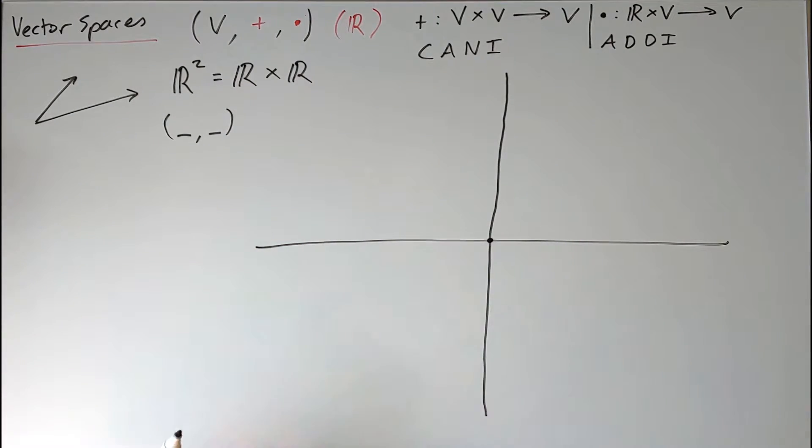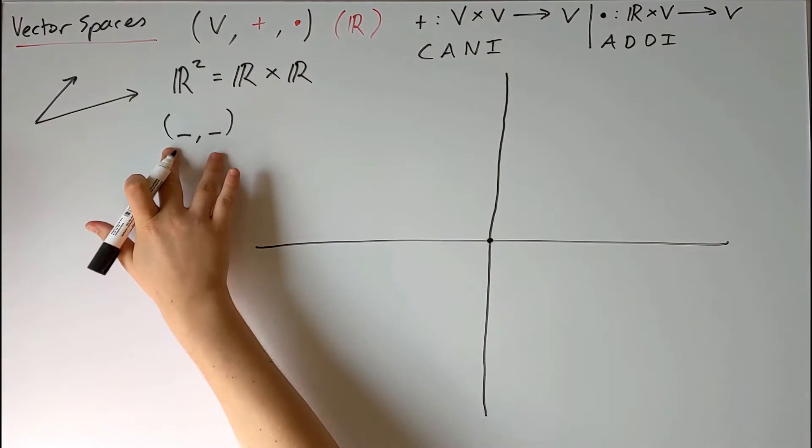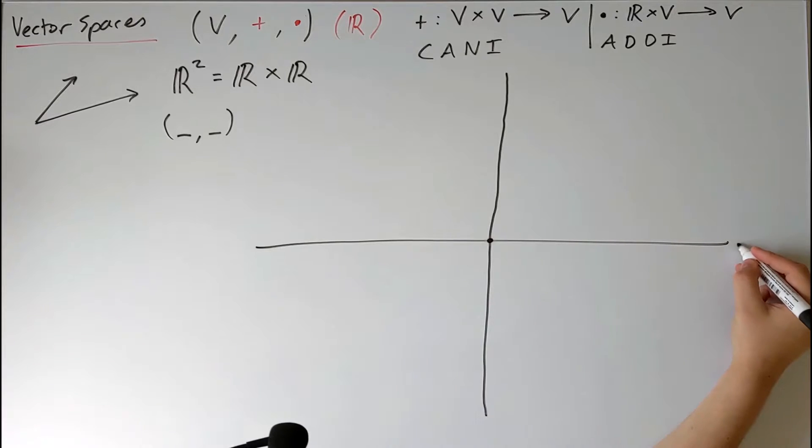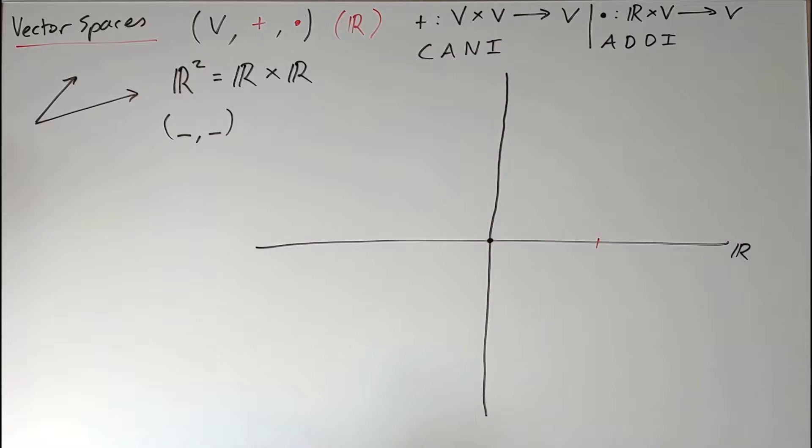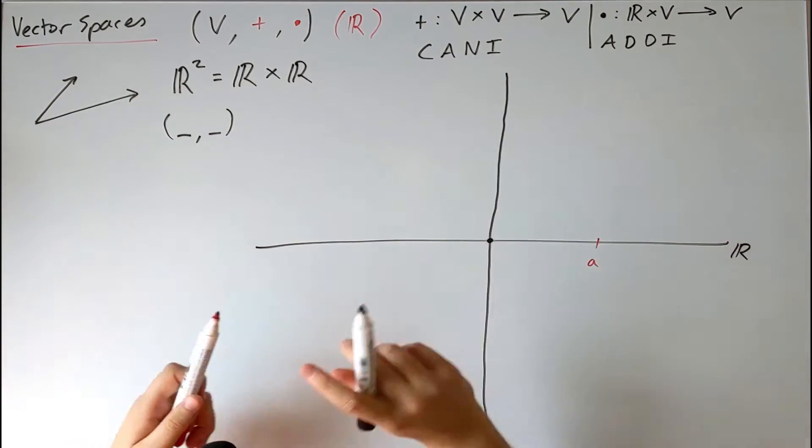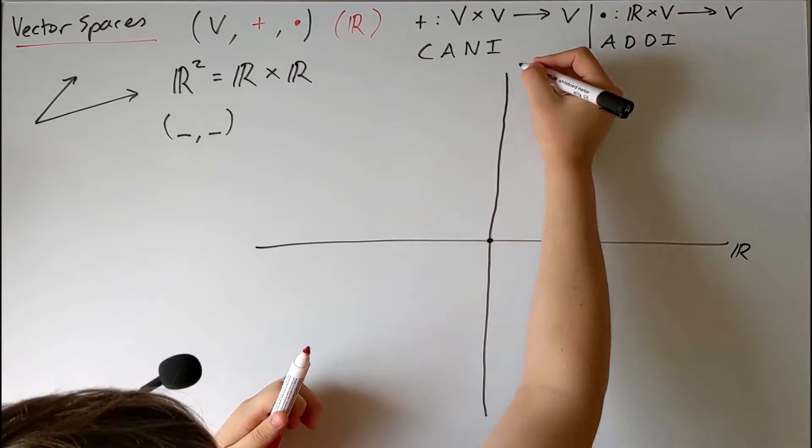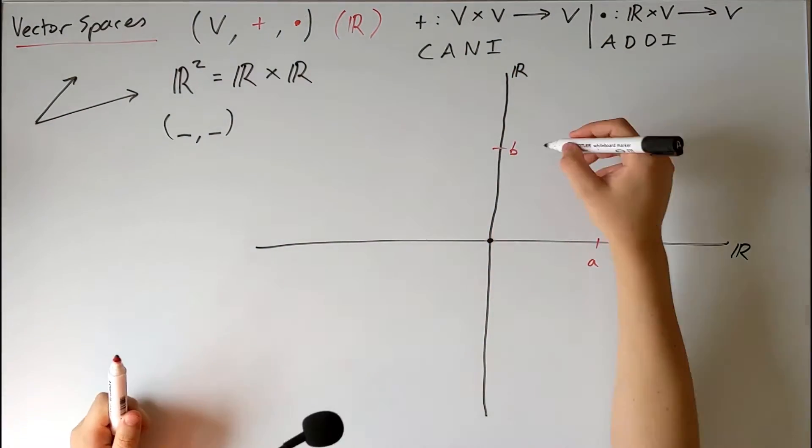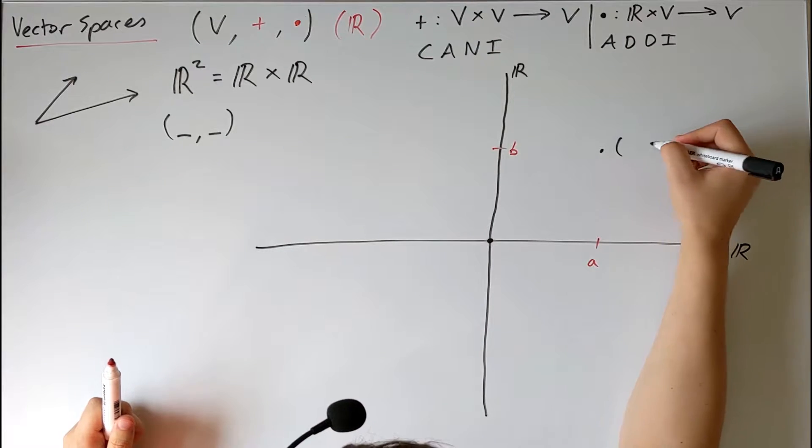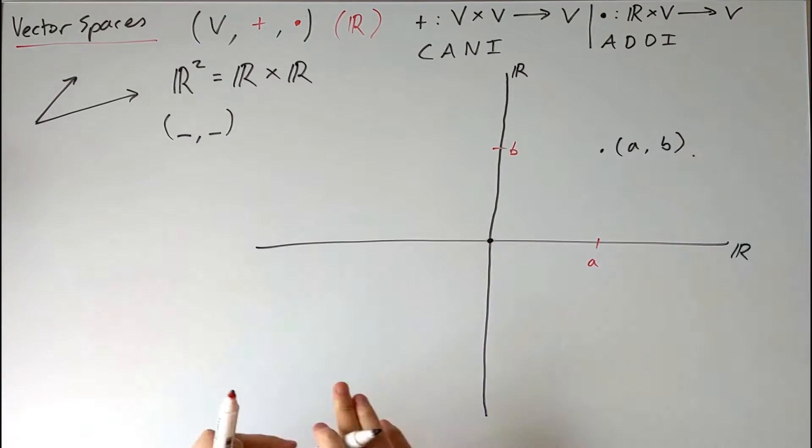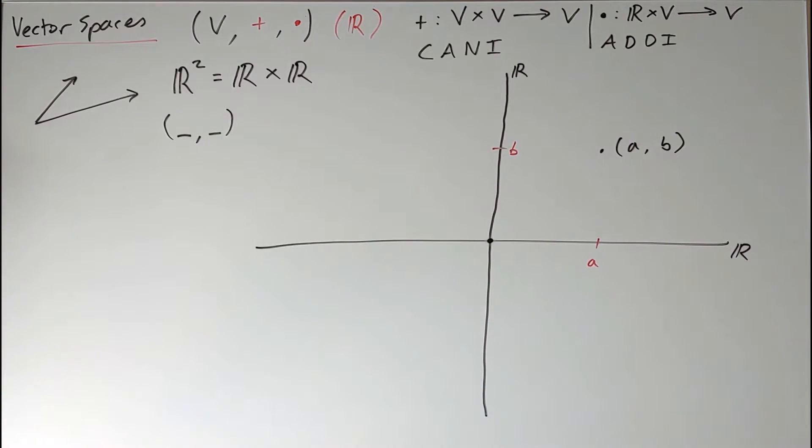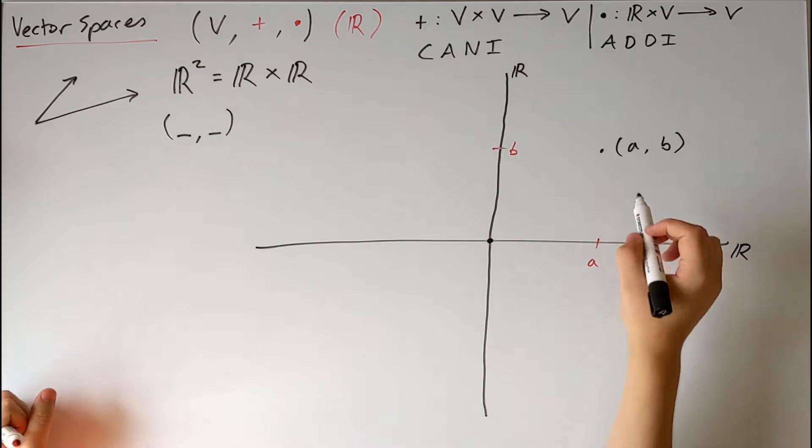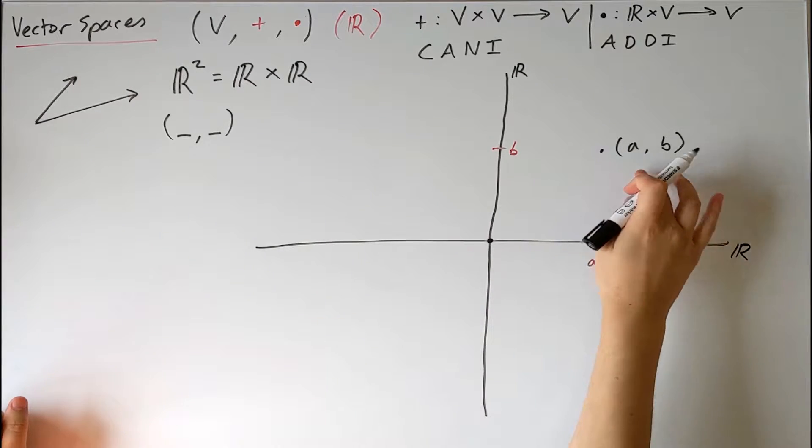The elements of ℝ² are these pairs of numbers, one number coming from this real line here, so I could choose this one, say, the second number from this real line, which gives us this element here, (a,b). So hopefully this should be a very comfortable notion, we should be familiar with this sort of Cartesian space, and we can loosely think about these as being coordinates on the space.